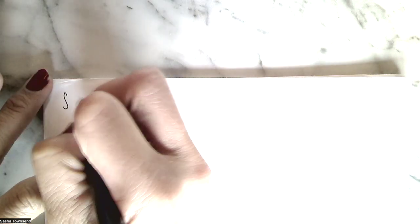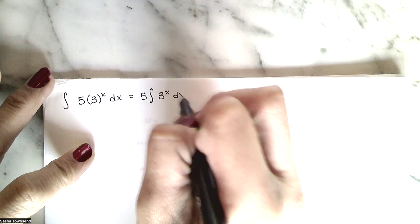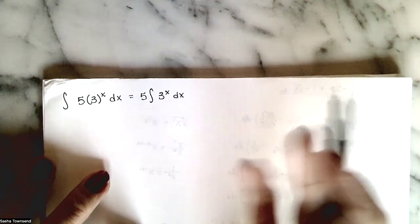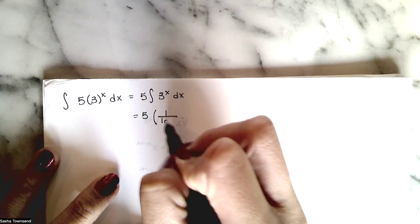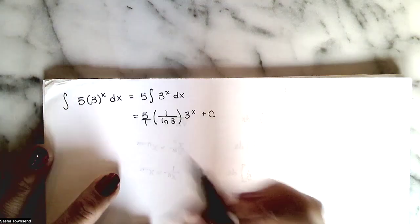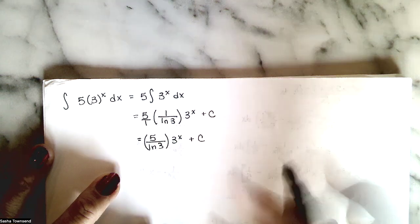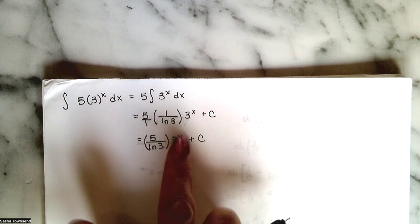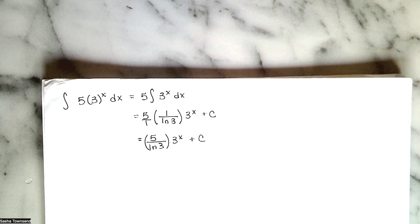Third example: the integral of 5 times 3 to the x. Factor out the 5. The anti-derivative of 3 to the x requires dividing by natural log of 3, giving 5 over natural log of 3 times 3 to the x plus c. Differentiating confirms: the derivative of 3 to the x is natural log of 3 times 3 to the x, the logs cancel, and we recover 5 times 3 to the x.